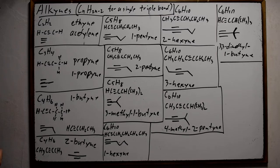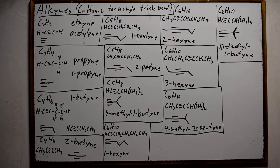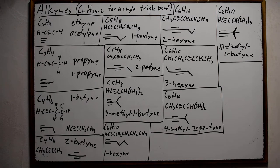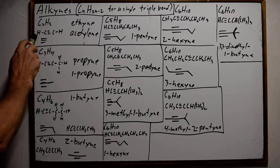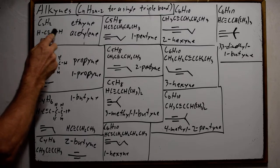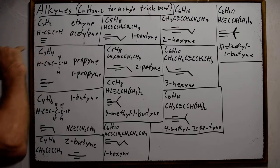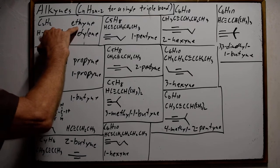We're going to go through them and show the process of naming them. The smallest alkyne we can have will have two carbons, since a triple bond is between two carbons. So C2H2 has the triple bond between the two carbons and a hydrogen on each end. The skeletal formula will just be three lines together.